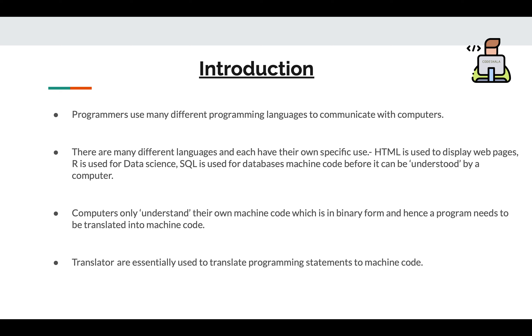Programmers use many different programming languages to communicate with computers. Computers only understand their own machine code, and a program needs to be translated into machine code before it can be understood by a computer.